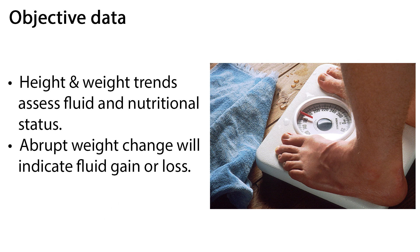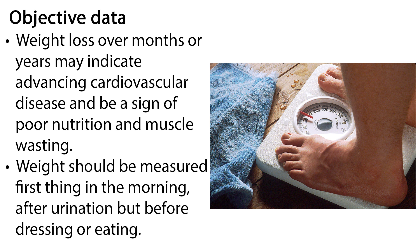It is important to gather accurate objective data, including vital signs and height and weight, which will provide valuable information about cardiovascular function. Height and weight trends assess fluid and nutritional status. Abrupt weight change will indicate fluid gain or loss. Weight loss over months or years may indicate advancing cardiovascular disease and be a sign of poor nutrition and muscle wasting. Weight should be measured first thing in the morning, after urination, but before dressing or eating.